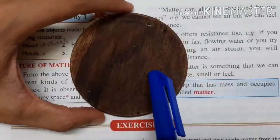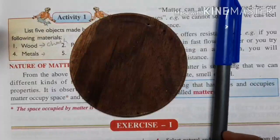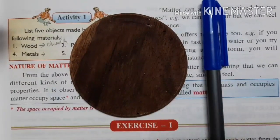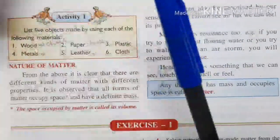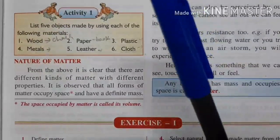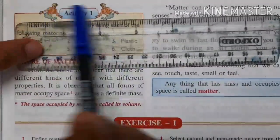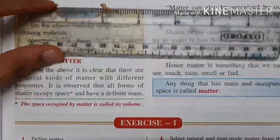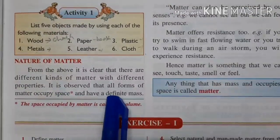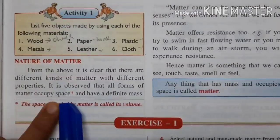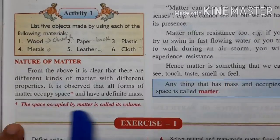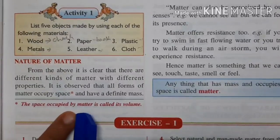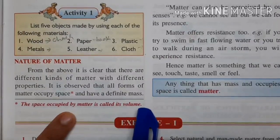This pan I kept here also occupies space. Other things — like this scale — also occupy space, this much space. So it is observed that all forms of matter occupy space. The space occupied by matter is called volume. Remember and underline this: the space occupied by matter is called volume.